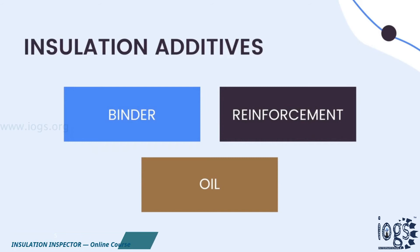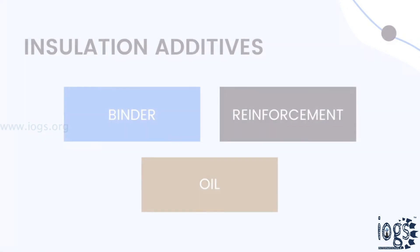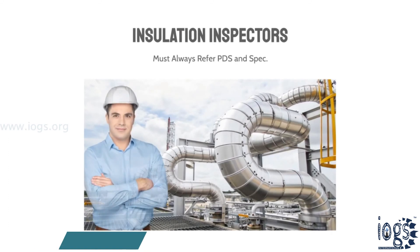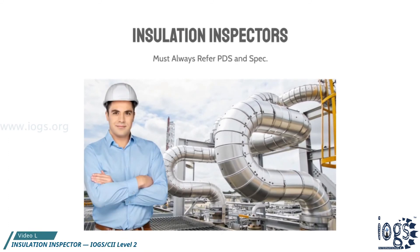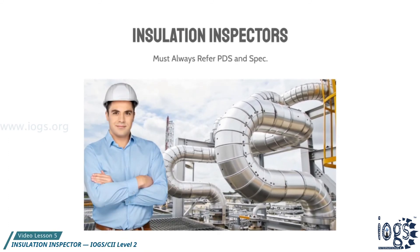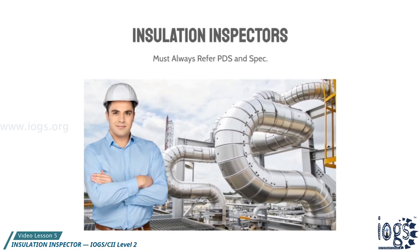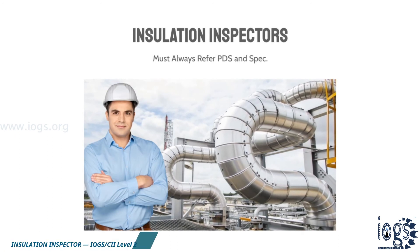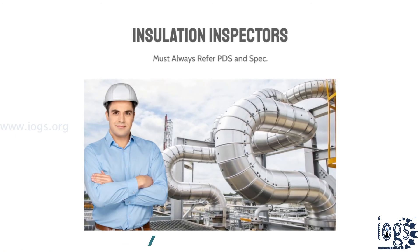Calcium silicate insulation, however, is only used for hot work. Additives such as binders, oils, or reinforcement may also be added to the insulation during manufacturing to improve its mechanical or chemical properties.